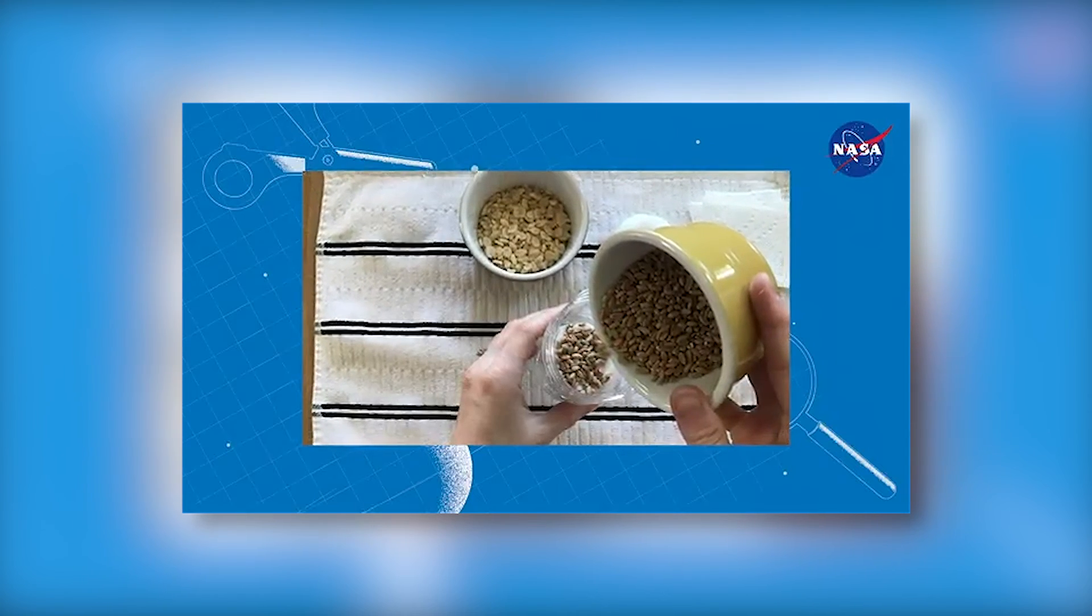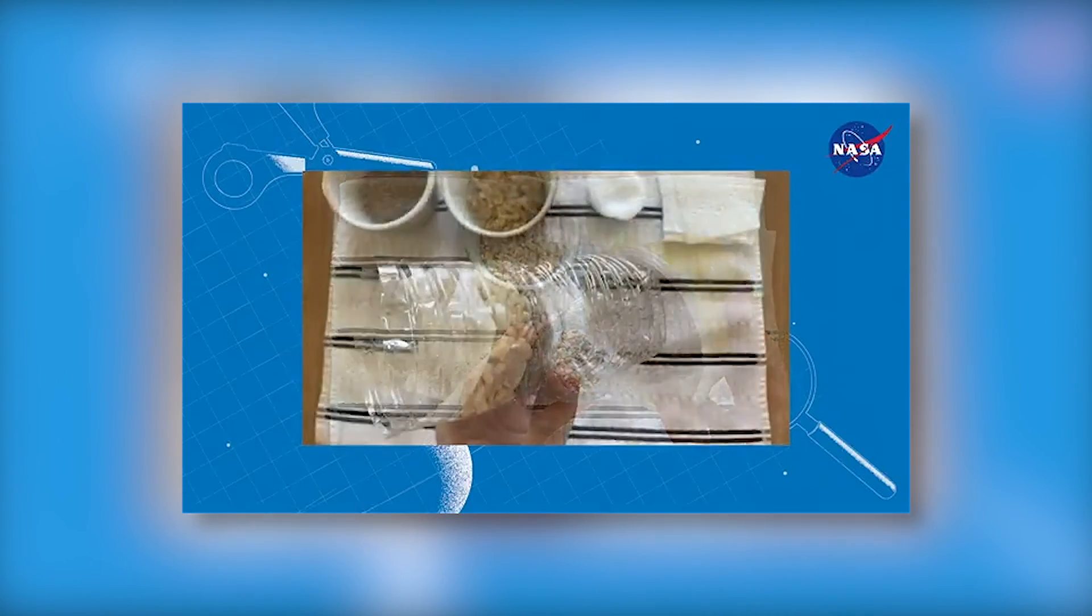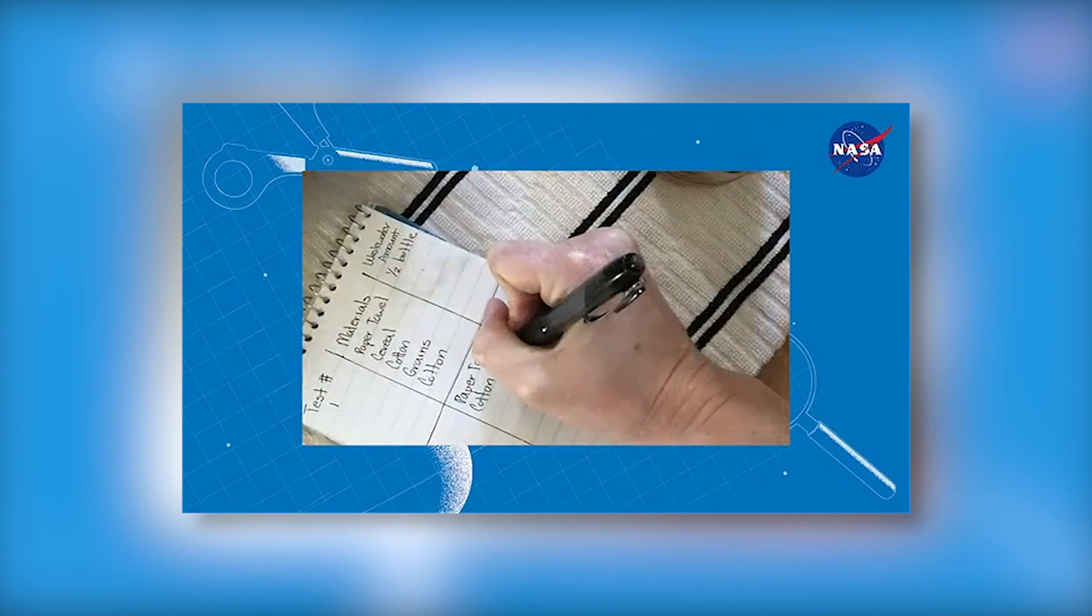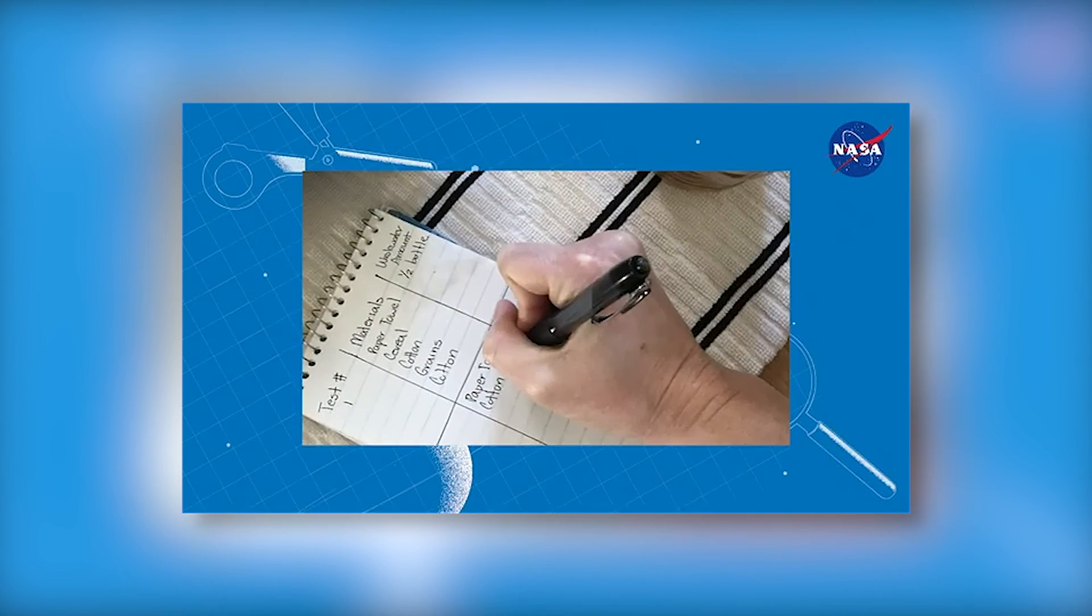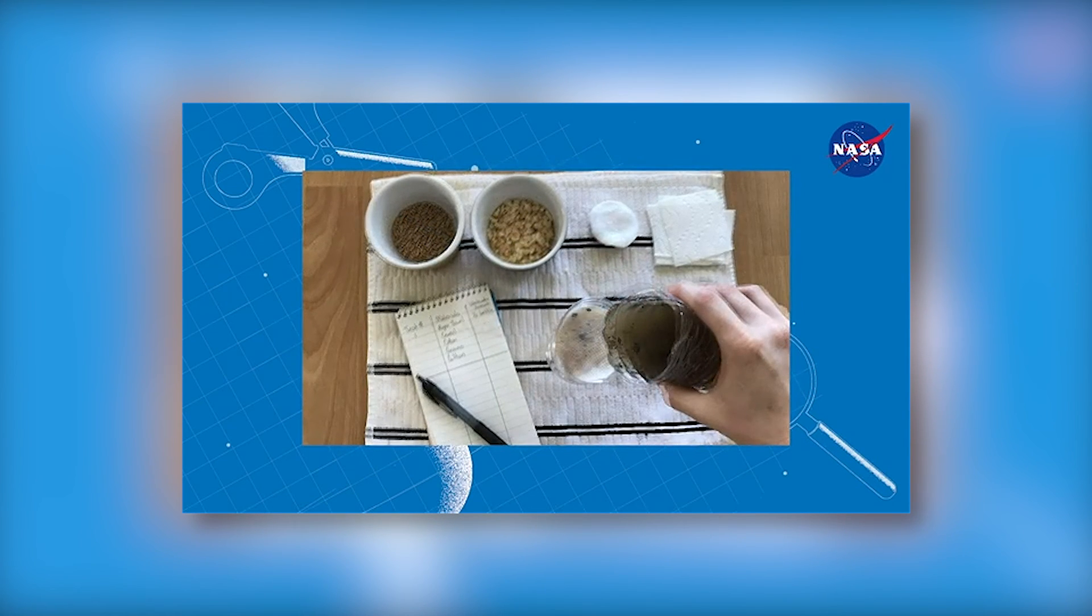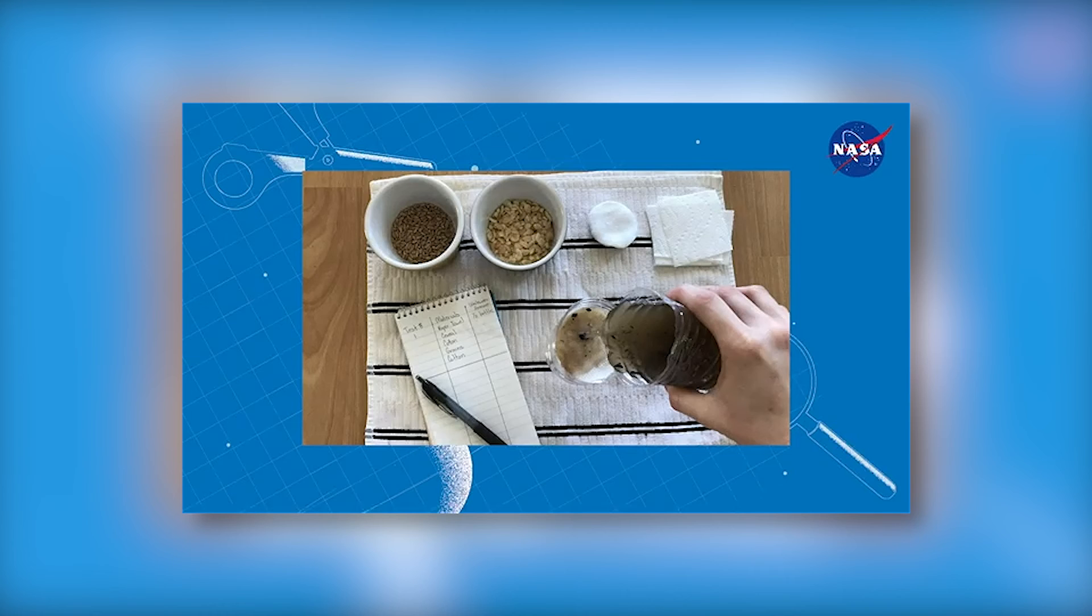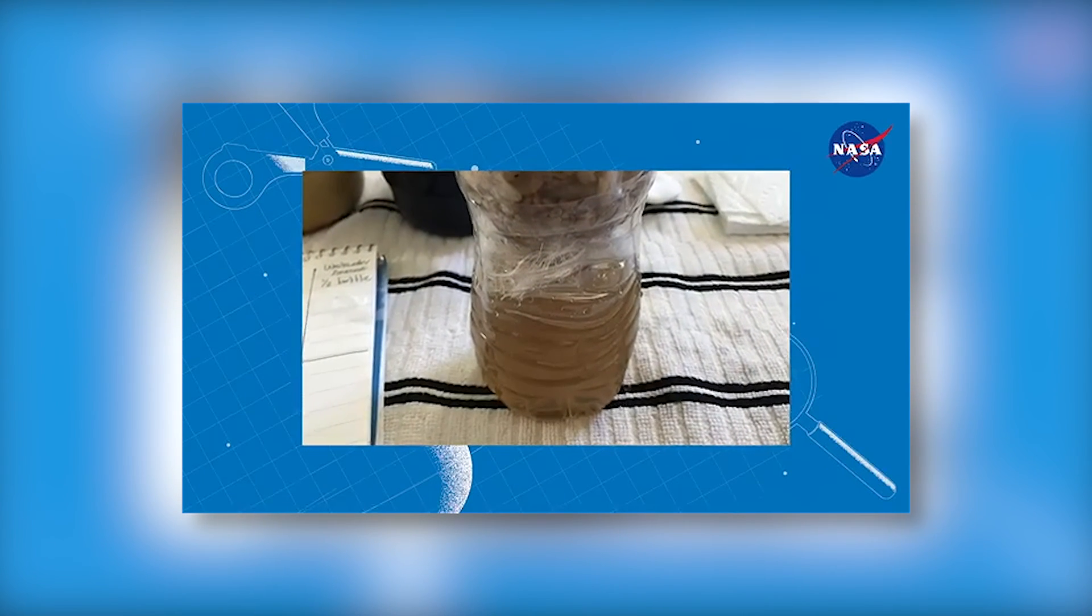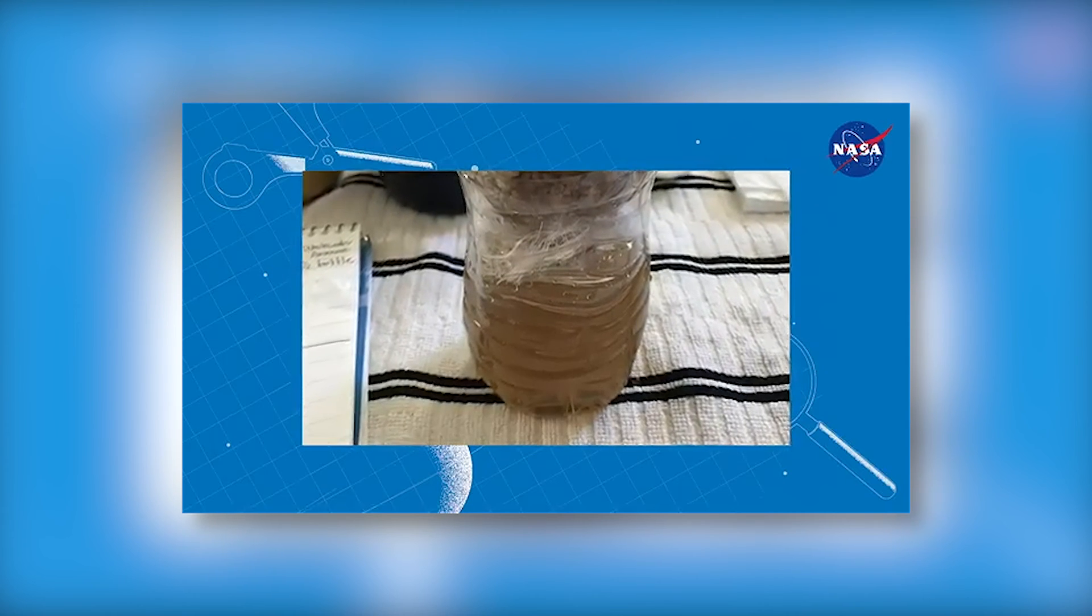Design your filter by layering or mixing the materials in the top bottle. Make a sketch of your design to improve it later. Be sure to document how much and which types of materials you've used as well. Pour your simulated wastewater into the top of your filter and observe the water that comes out. Try to gauge how effective your filter was by observing how much water was filtered, how clean the water is, and how long it took.